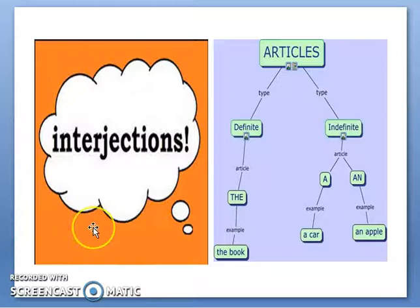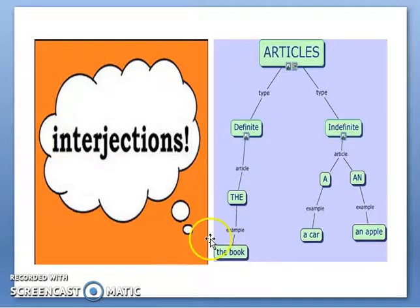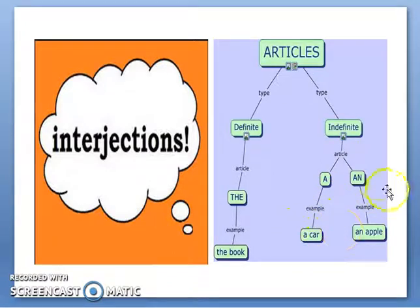The last one is interjection. Interjection expresses extreme emotions or feelings, like the words wow, oh, ouch, oops — these are interjections. However, they are no longer in use in Pakistani English, so it is better to use articles as our eighth part of speech. In articles, we have definite and indefinite articles. Definite means a special one — that is 'the', as in the holy book. Indefinite means 'a' and 'an'. 'A' is used for words starting with a consonant, like a car. 'An' is used with words starting with a vowel sound, like an apple.